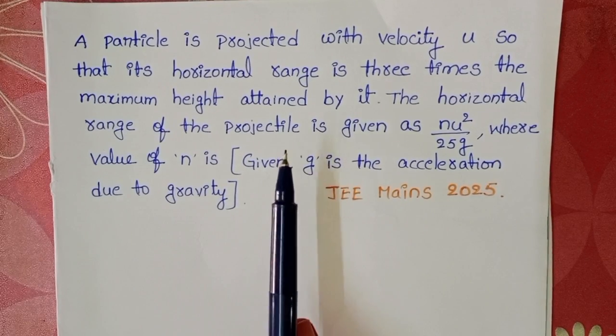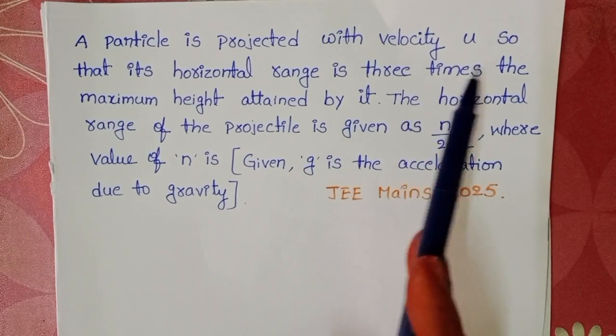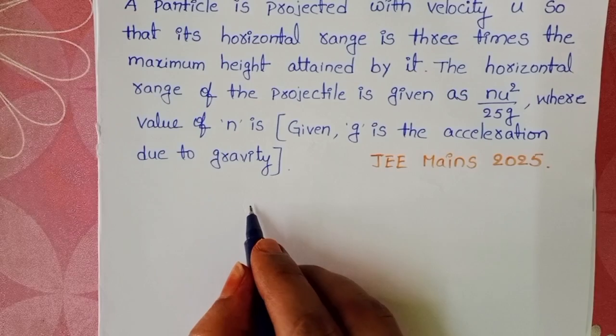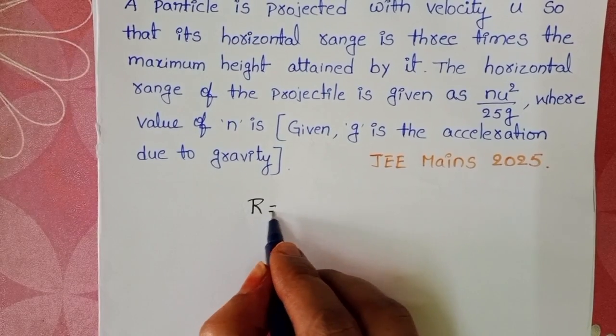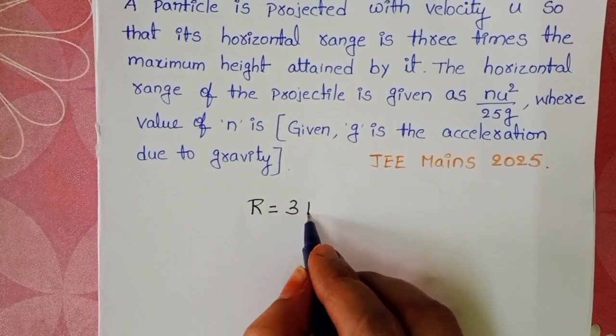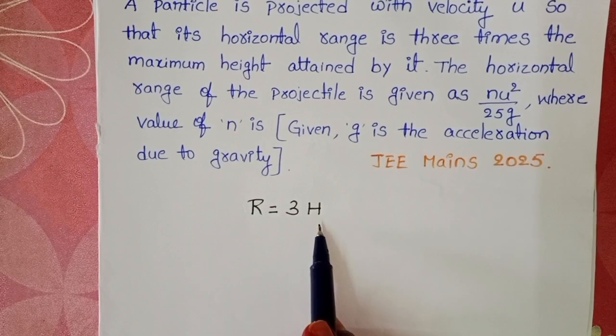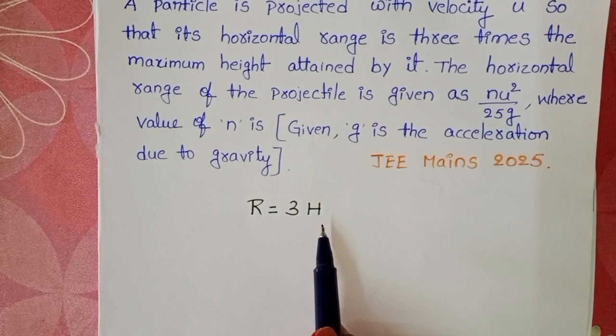In this question, a particle is projected with certain initial velocity, and the given condition is the range of the particle is three times the maximum height attained by the particle, where R is the range and H is the maximum height.